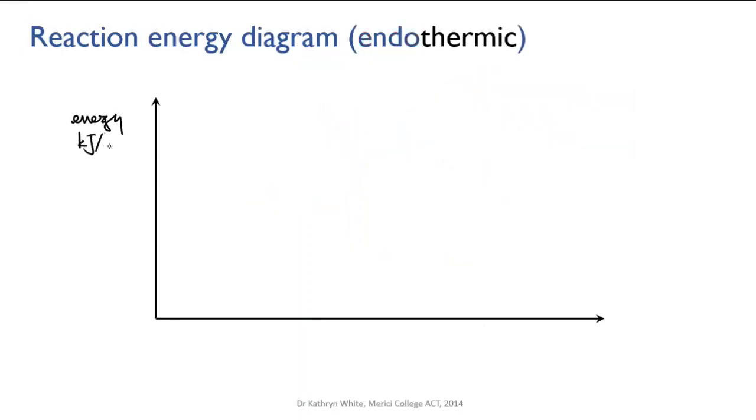Okay, now let's try drawing a diagram for an endothermic reaction. If it's endothermic, then energy is absorbed and our reactants at the beginning of the reaction have less energy than the products at the end.